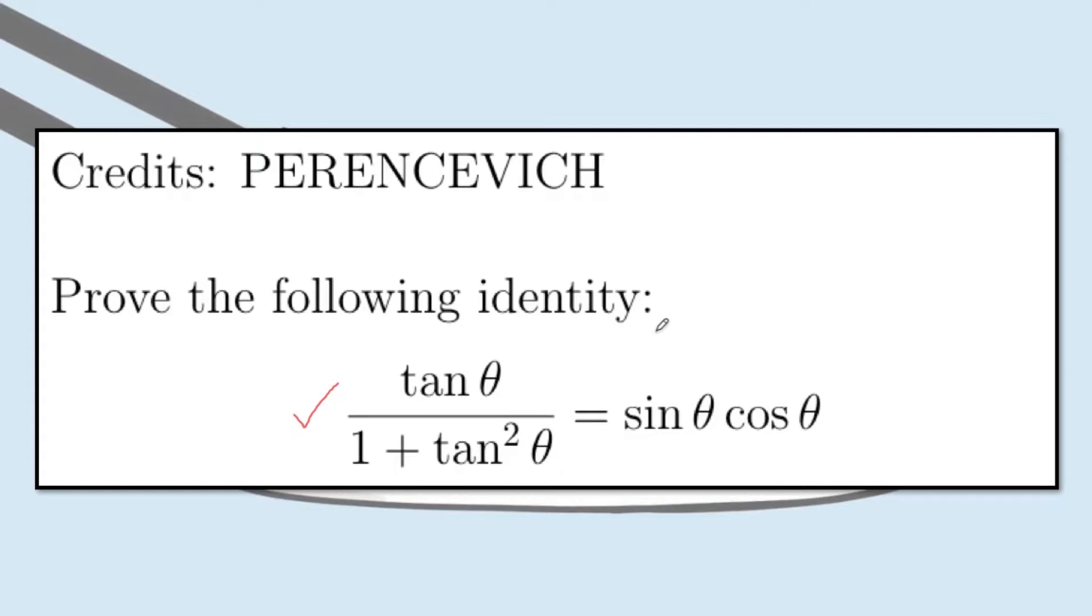Note that when you're giving a proof, you're not allowed to use any properties of equalities, and it is best for us to just maintain whatever is on one side. For example, since we're manipulating the left-hand side, we shouldn't do anything to the right-hand side. So the right-hand side will always remain to be sine theta times cosine theta.